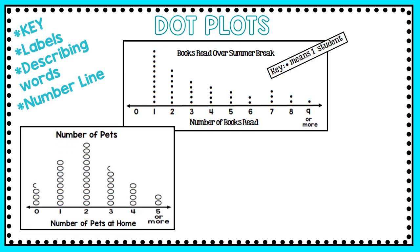Here's another dot plot where you don't necessarily have dots but you have circles. Looking at the labels and describing words, I see 'number of pets' is my title, and 'number of pets at home' labels the number line below. The key tells me that every circle represents four students, so when I'm looking at this dot plot I'll count each symbol by four.